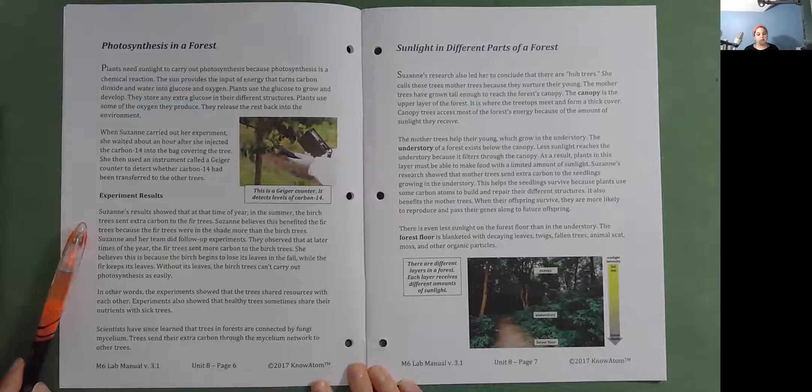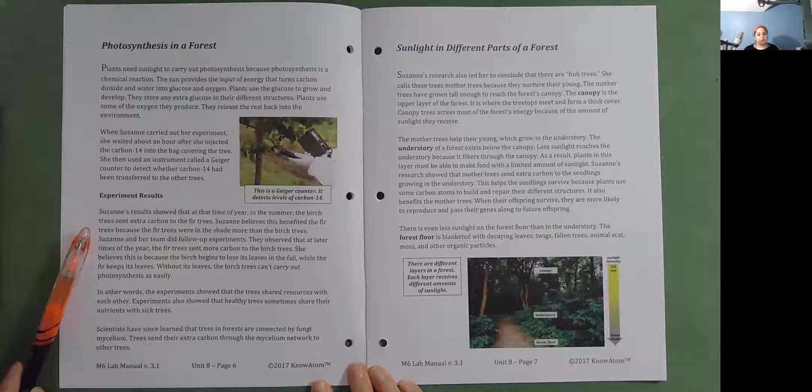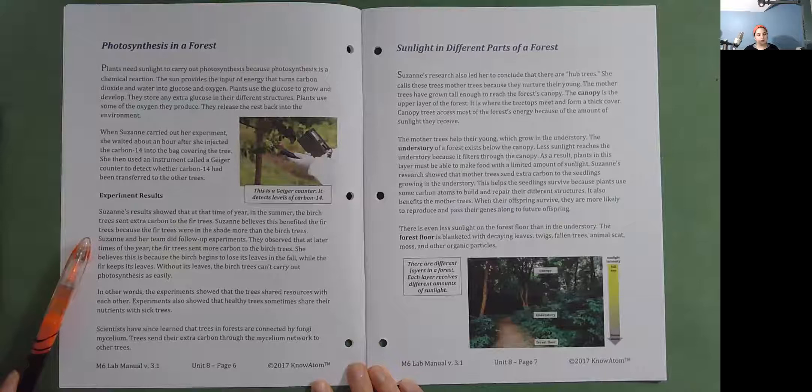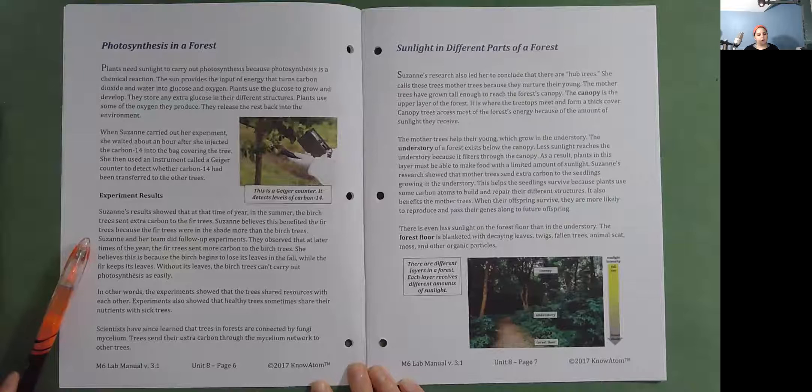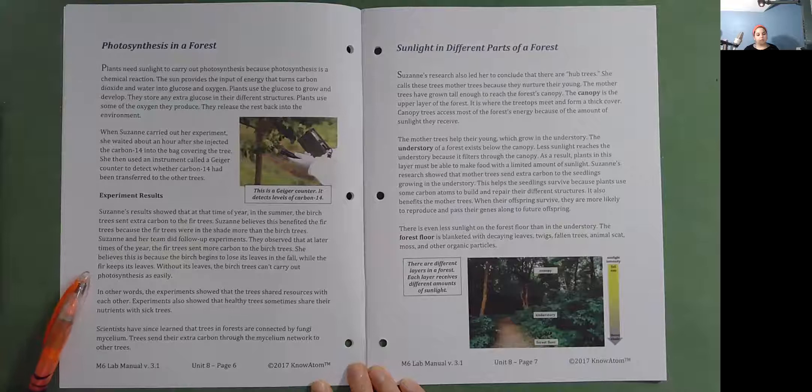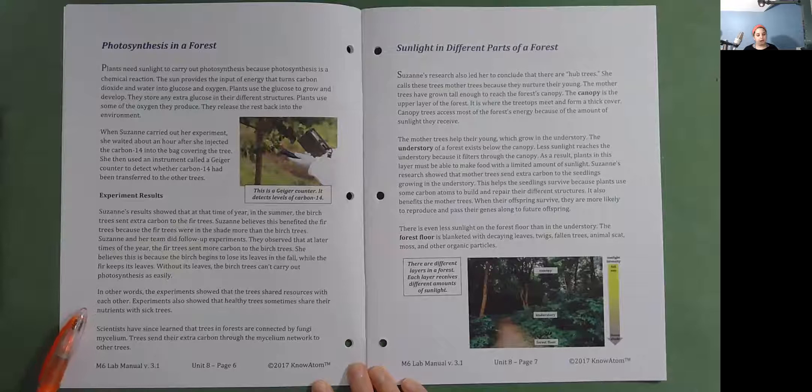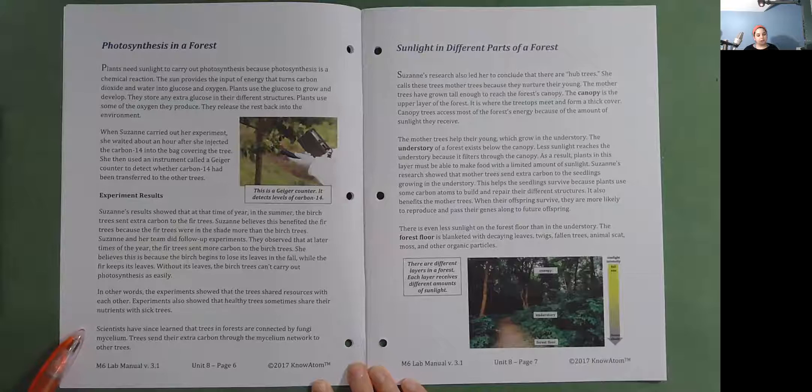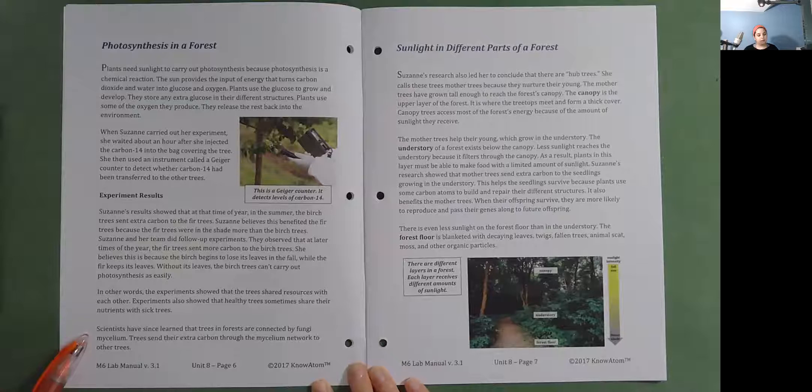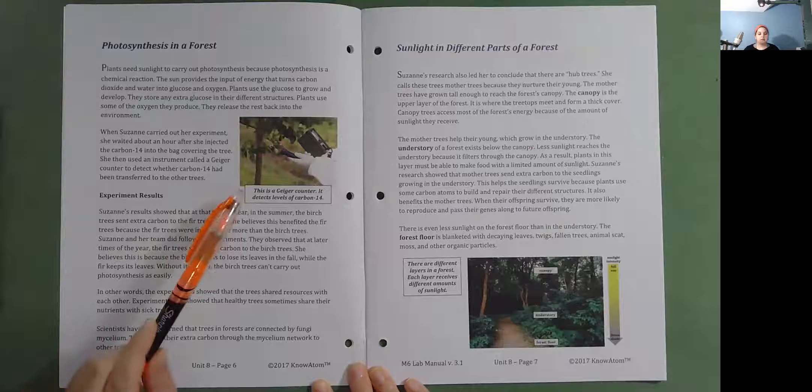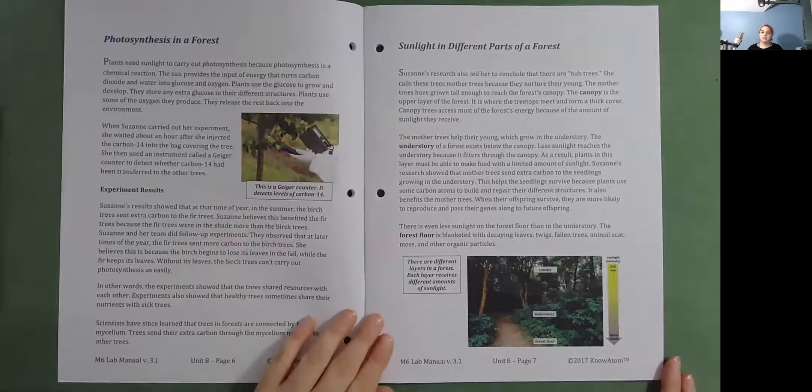Suzanne believes this is because the fir trees were in the shade more than the birch trees. Suzanne and her team did follow-up experiments. They observed that at later times of the year, the fir tree sent more carbon to the birch trees. She believes this is because the birch begins to lose its leaves in the fall while the fir keeps its leaves. Without its leaves, the birch trees can't carry out photosynthesis as easily. In other words, the experiments showed that the trees shared resources with each other. Experiments also showed that healthy trees sometimes share their nutrients with sick trees. Scientists have since learned that trees and forests are connected by fungi mycelium. Trees send their extra carbon through the mycelium network to other trees. This is a Geiger counter. It detects levels of carbon-14.